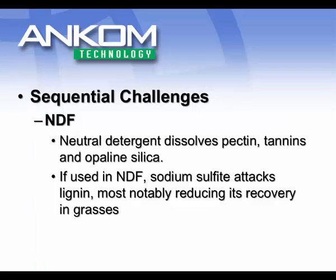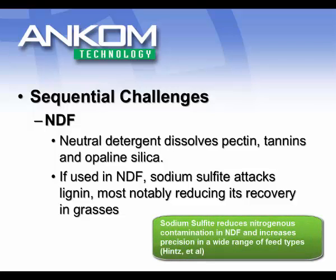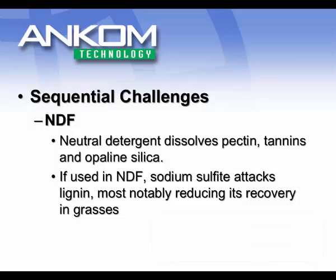With each step of the sequential process, there are some problems and challenges. For example, neutral detergent removes pectins, tannins, and opaline silica, which are not removed by acid detergent. So if you have a sample high in one of those components, you will have a false low value for acid detergent with a sequential process. With neutral detergent, we normally utilize sodium sulfite to remove the disulfide bonds — the protein bonds. However, sodium sulfite attacks lignin, so you'll have lower recovery specifically with grasses when you do your lignin step.